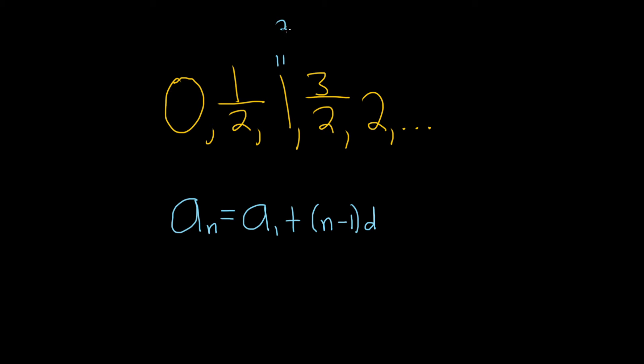You can think of 1 as 2 halves, and think of 2 as 4 halves. And it becomes even more clear that you just keep adding 1 half. So d, which is called the common difference, is equal to 1 half.